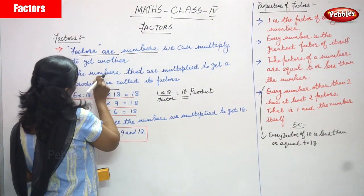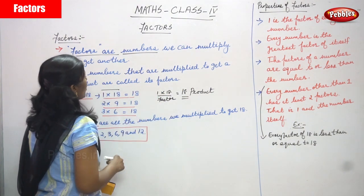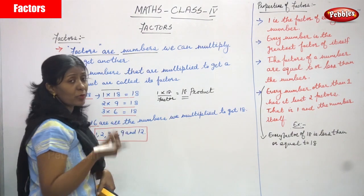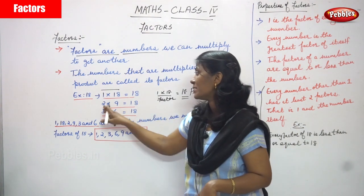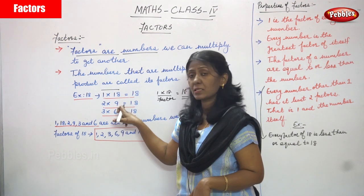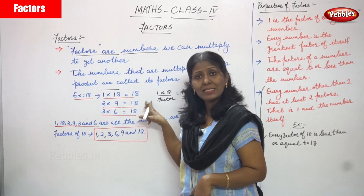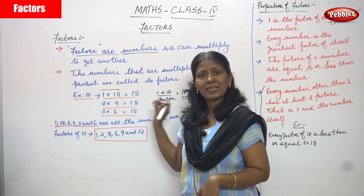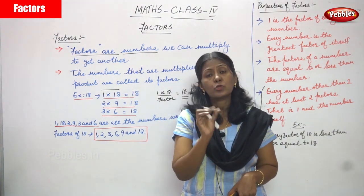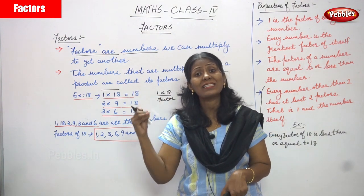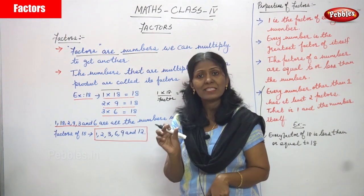One more definition: the numbers that are multiplied to get a product are called factors. Any numbers multiplied to get a product — that is, a result — are called factors. For example, 2 into 9: 2 is a number and 9 is another number. These two numbers are multiplied to get another result — 2 into 9 gives the answer 18.